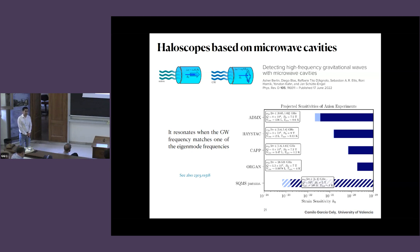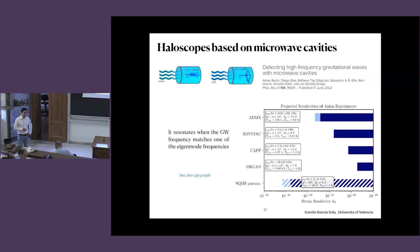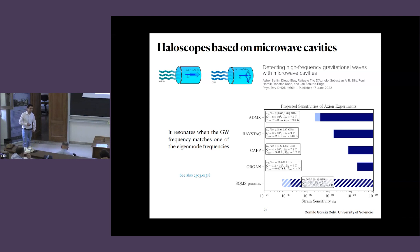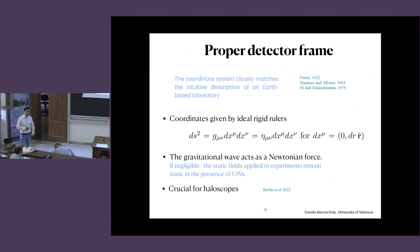A critic raises that the analogy between the axion case and gravitational waves does not work because the gravitational wave contribution to Maxwell's equations is more complicated — it's impossible to avoid complications in the homogeneous part of Maxwell's equations in addition to the inhomogeneous part. The speaker responds that the disagreement may be about working in different frames, and that in the proper detector frame the effect is a Newtonian force.